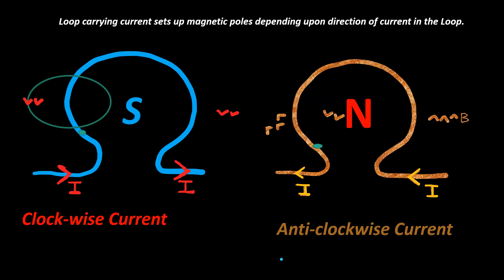Its meaning is, loops carrying current will behave as a tiny unit of a bar magnet or a slice of a bar magnet.